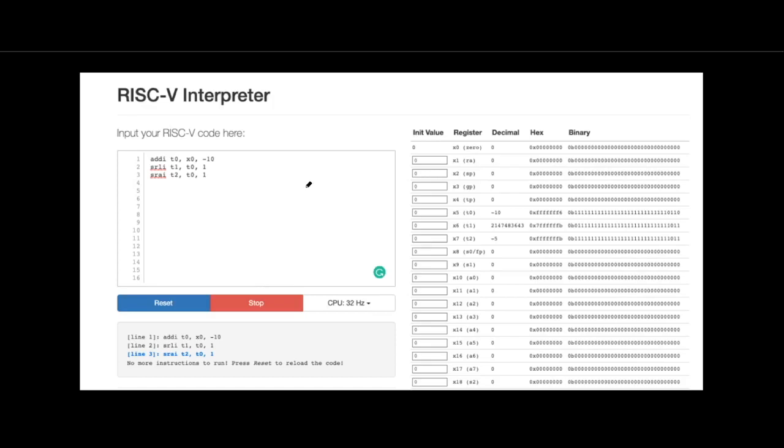Now, this is directly from an online compiler, just to show you in the compiler what it would look like. And we can see our final results in decimal, hex, and binary.